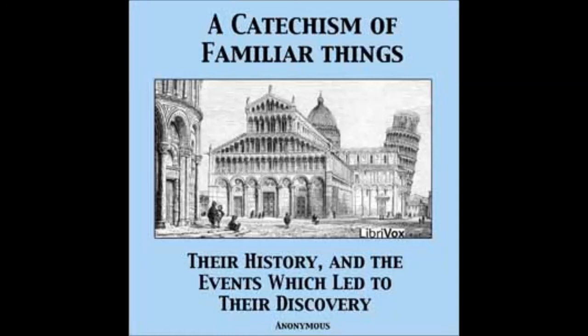Describe the five orders of architecture. The Tuscan, from Tuscany, is the most simple and devoid of ornament, and its columns or pillars are plain and massive. The Doric, from the Dorians in Greece, is durable and noble in appearance, having its columns plain like the Tuscan, but the upper parts more ornamental.